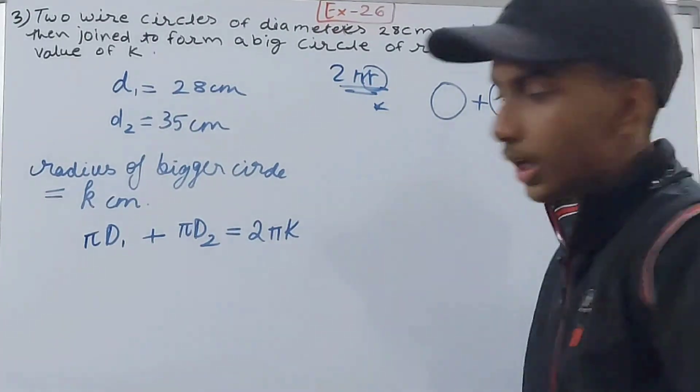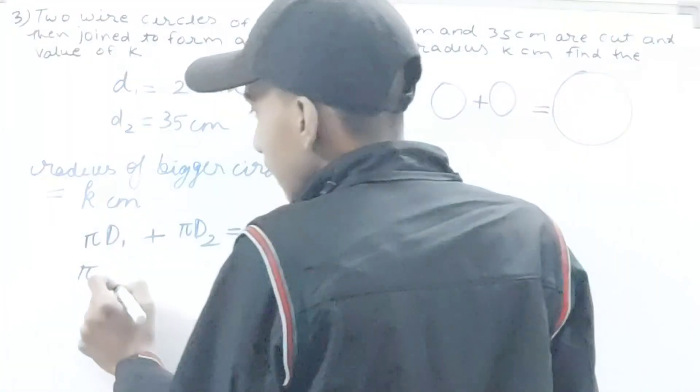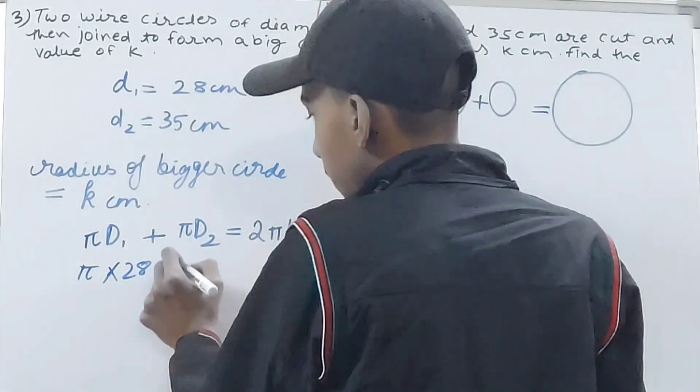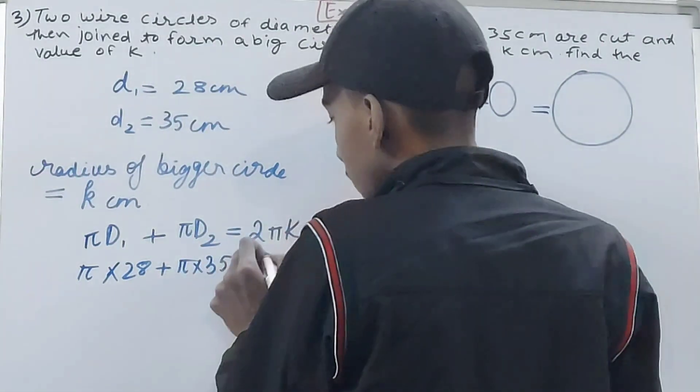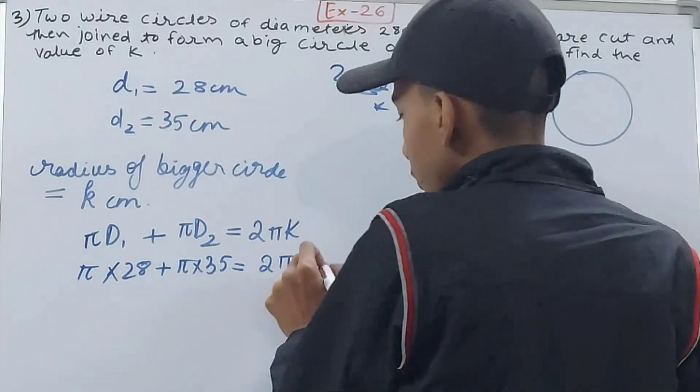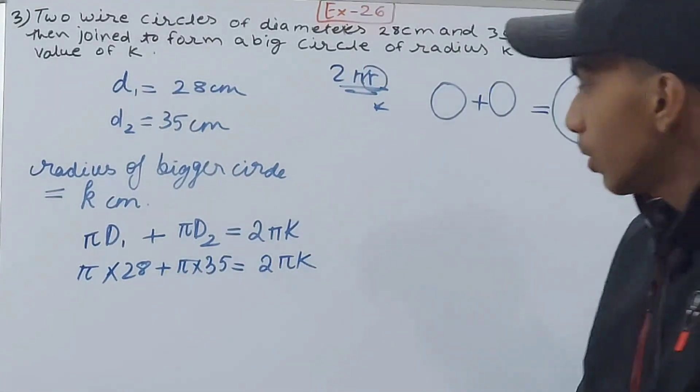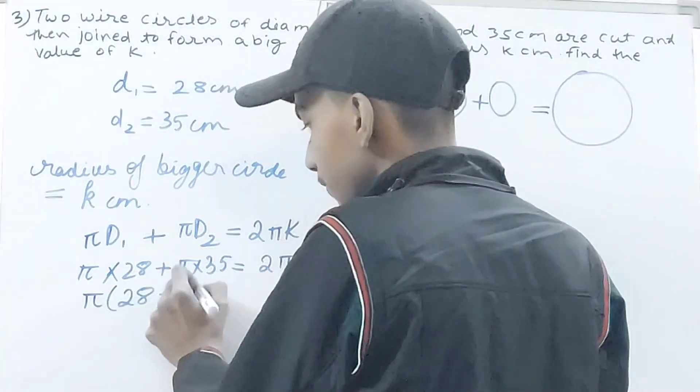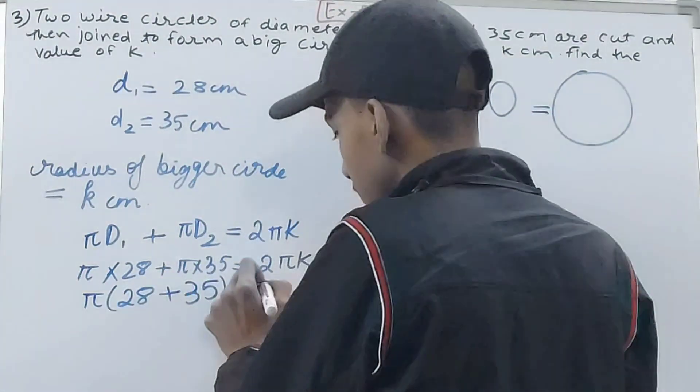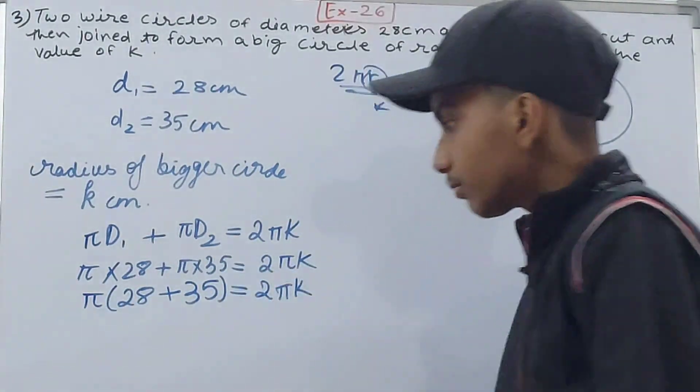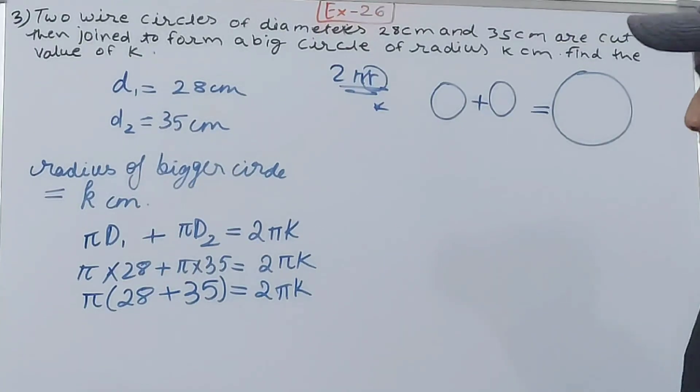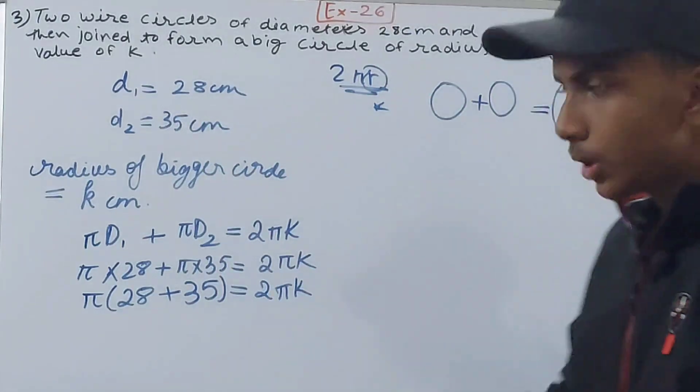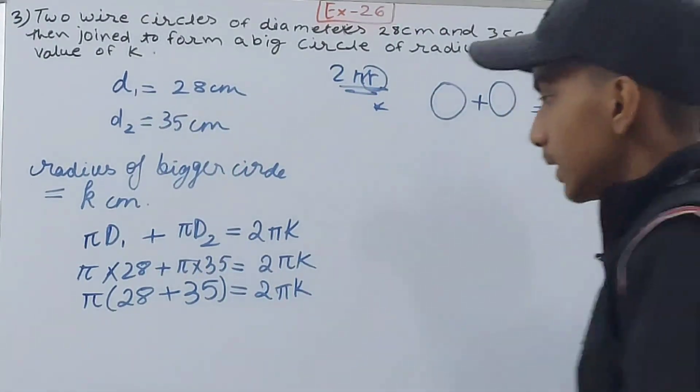Now put the values down, very simple: π × 28 plus π × 35 equals 2πk. 2πk will stay as it is. π and π are common, so I will take π common. I will be left with 28 plus 35 equals 2πk. Now I want the value of k because it asks us to find the value of k.